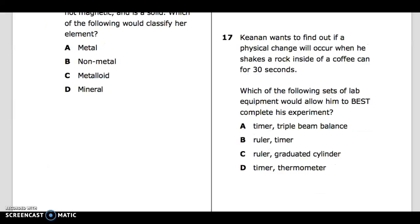17: Keenan wants to find out if a physical change will occur when he shakes a rock inside a coffee can for 30 seconds. Which of the following sets of lab equipment would allow him to best complete his experiment? A. Timer, Triple Beam Balance. B. Ruler, Timer. C. Ruler, Graduated Cylinder. D. Timer, Thermometer.